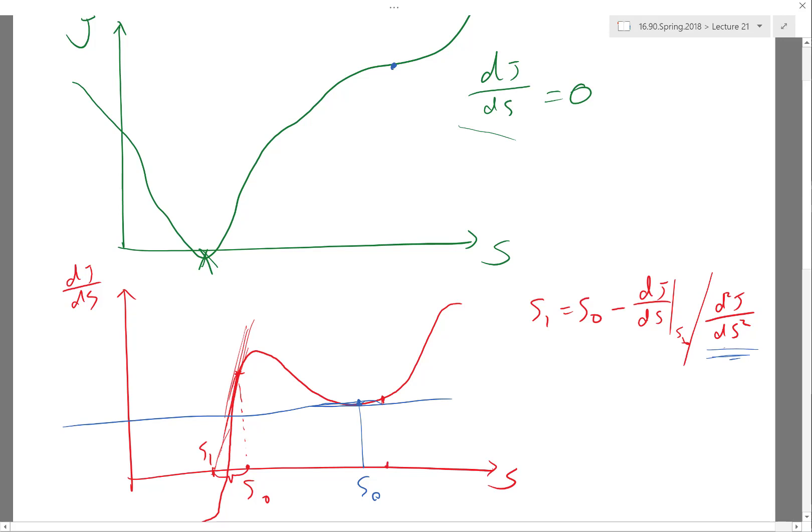We can step small. If we know the derivative dJ/dS, then by definition of the derivative, we know if we take a small step, which direction should I take the small step in order for my J to decrease. A big part of optimization is just to take small steps to progressively decrease the objective function, just to get better and better designs along the way.